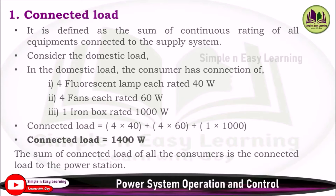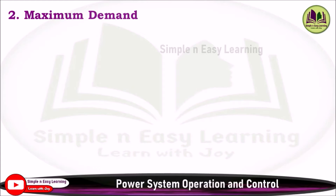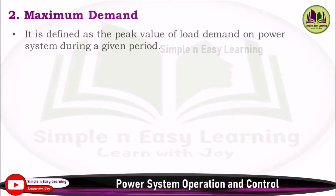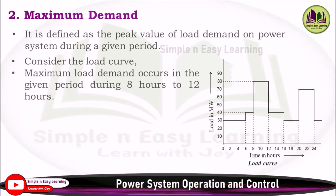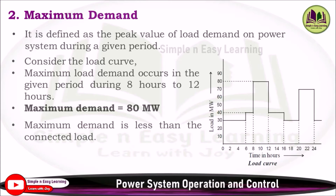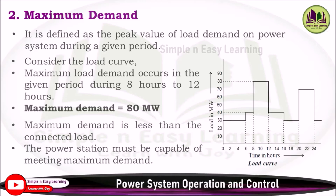The sum of connected loads of all consumers is the connected load to the power station. Second: maximum demand. It is defined as the peak value of load demand on the power system during a given period. For example, on a 24-hour load curve, if the peak occurs during 8 to 12 hours at 80 megawatt, that is the maximum demand. Maximum demand is less than connected load, and the power station must be capable of meeting it.